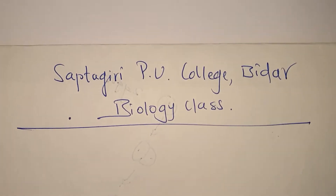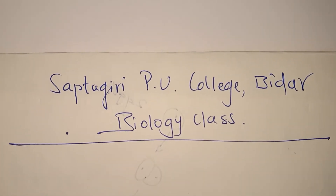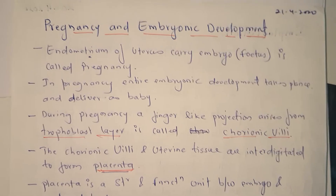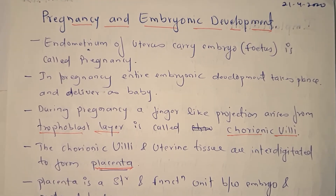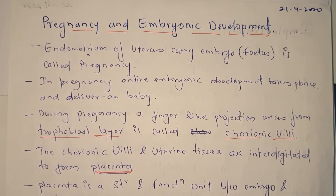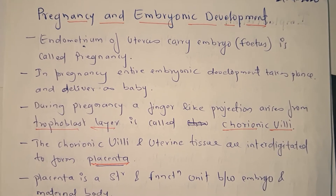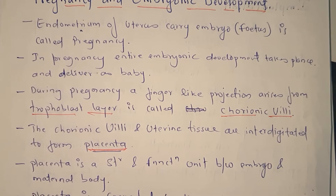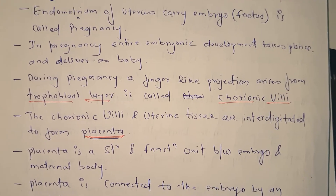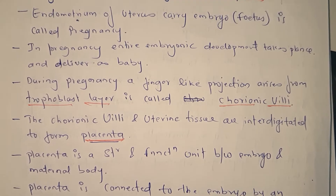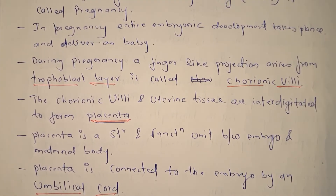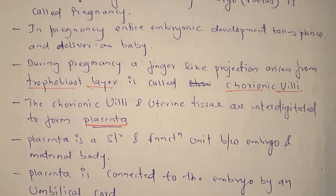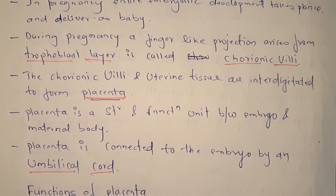Hello students, welcome to Saptgiri POC College Bidar. This is your biology class. As in yesterday's class, we discussed pregnancy and embryonic development — the uterus carries the fetus, and all embryonic development takes place during pregnancy until delivery. The trophoblast layer gives rise to chorionic villi, finger-like structures. Chorionic villi and uterine tissue are interdigitated to form the placenta, which is a structural and functional unit between the embryo and maternal body, connected to the developing baby by the umbilical cord.